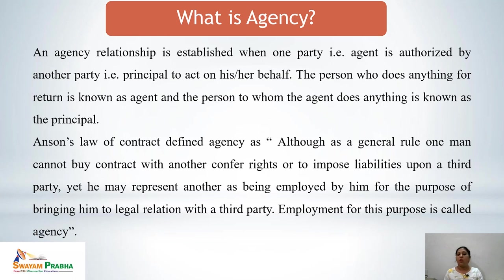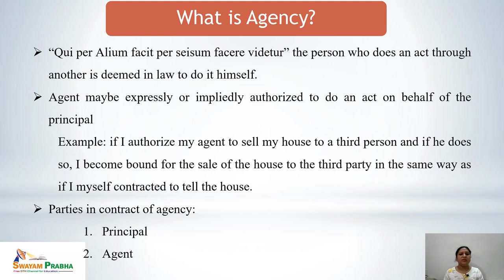The law of contract defines agency as: although as a general rule one man cannot by contract confer rights or impose liabilities upon a third party, yet he may represent another as being employed by him for the purpose of bringing him into legal relations with a third party — such employment is called agency. There is a legal maxim which means: the person who acts through another is deemed in law to do it himself. This maxim clearly shows that any act done by another person would be deemed as done by the principal himself.